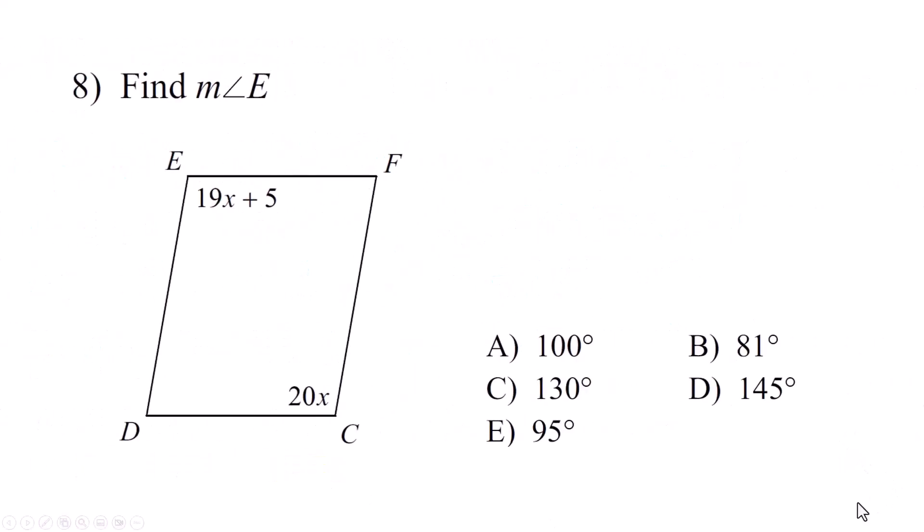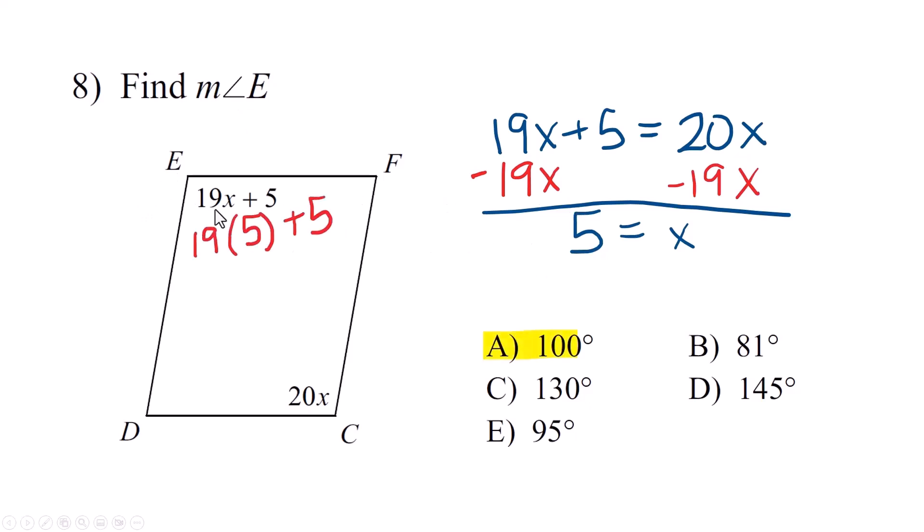Number 8. We just went over those properties. Remember what it says about opposite angles in a parallelogram? Set them equal to each other. 19x plus 5 equals 20x. Algebra. Subtract 19x from both sides. 5 equals x and gosh that would be great but none of our answers are 5 because they want us to find the actual angle. But we're going to have to put this 5 into this expression and we're going to end up with 100 degrees.